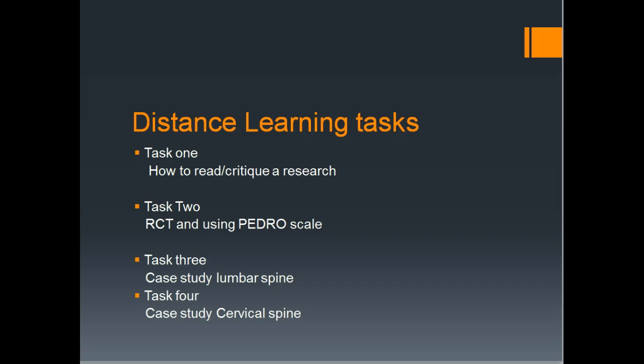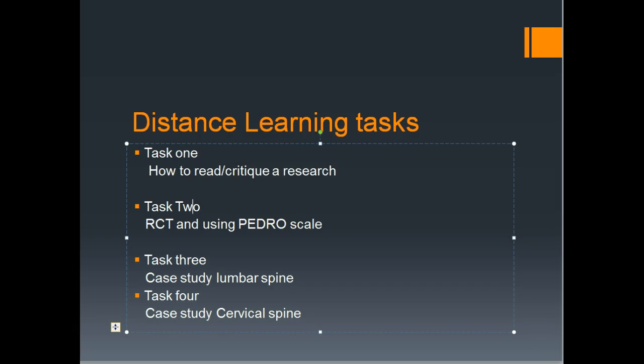For distance learning, task one is how to read and critically appraise research. Task two, for those joining the program, covers how to read a randomized controlled trial and how to critique RCTs using the PEDro scale. Task three involves a case study where you think through subjective examination, objective examination, and treatment, and record a video of yourself assessing and treating a model or real patient to submit at the start of teaching block four. There is also a fourth case study related to the cervical spine.